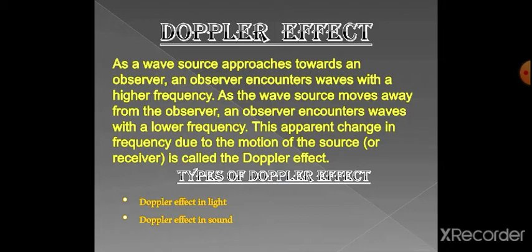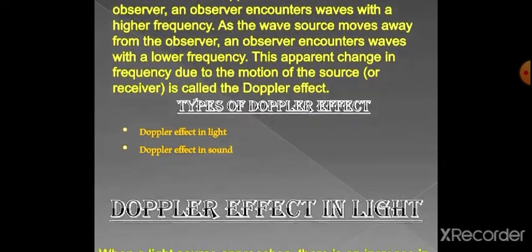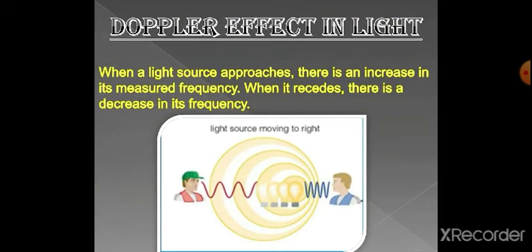Types of Doppler effect: The Doppler effect can be seen in light waves and sound waves. Doppler effect in light: When a light source approaches, there is an increase in its measured frequency. When it recedes, there is a decrease in its frequency. This can be understood by the given example.